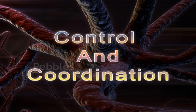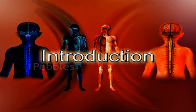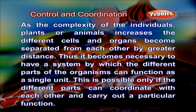Control and Coordination. As the complexity of individuals, plants or animals increases, the different cells and organs become separated from each other by greater distance. Thus it becomes necessary to have a system by which the different parts of the organisms can function as a single unit. This is possible only if the different parts can coordinate with each other and carry out a particular function.